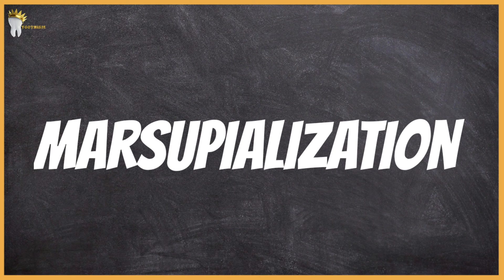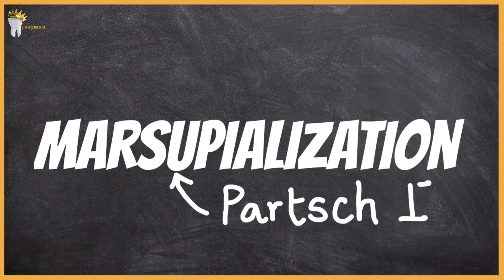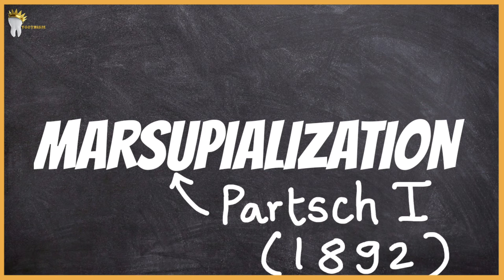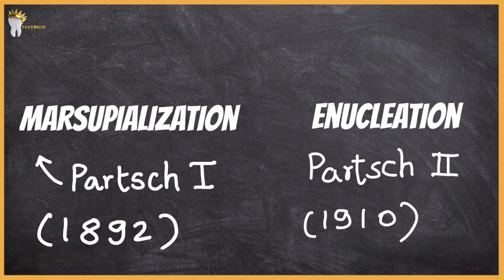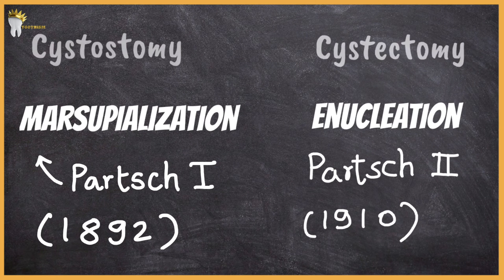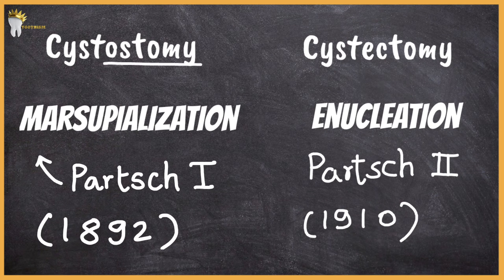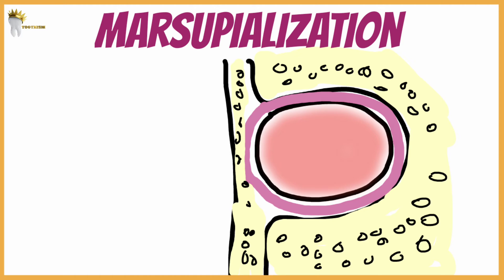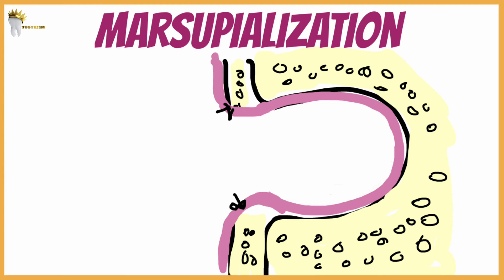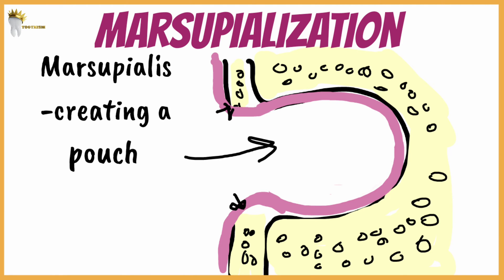The next treatment modality is marsupialization, also known as the Partsch I operation. This was described by Partsch in 1892, before enucleation — that's why marsupialization is Partsch I and enucleation is Partsch II. It is also called cystostomy, meaning creating a surgical window in the wall of the cyst and evacuating the contents. Only the portion removed to create the window is taken out, and the cyst is converted into a pouch by suturing its lining to the oral mucosa. In Latin, 'marsupialis' means pouch — that's why this is known as marsupialization.